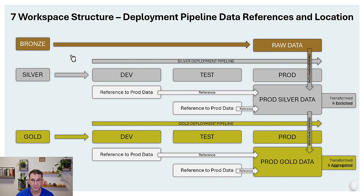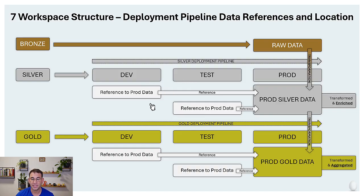Looking at our architecture, we have seven workspaces. We have the raw data workspace in the bronze layer, then we have three workspaces for dev, test and prod deployment stages in the silver layer, and the same thing for the gold layer, making seven workspaces in total. The dev and test workspaces will reference the data coming from the prod stage and will dynamically adjust to know which lake house to write to and which workspace we are working in.